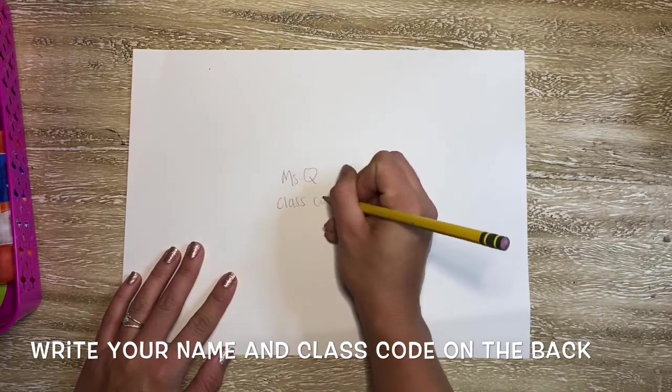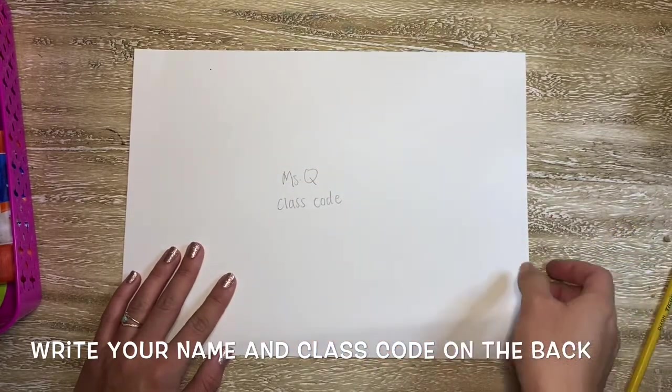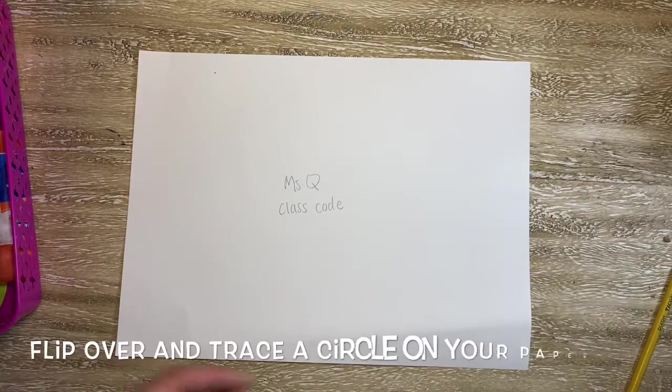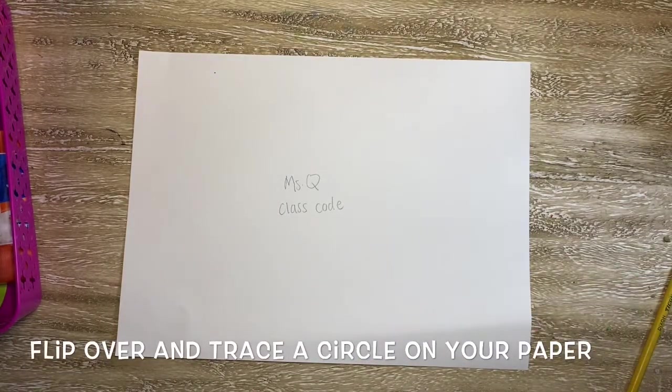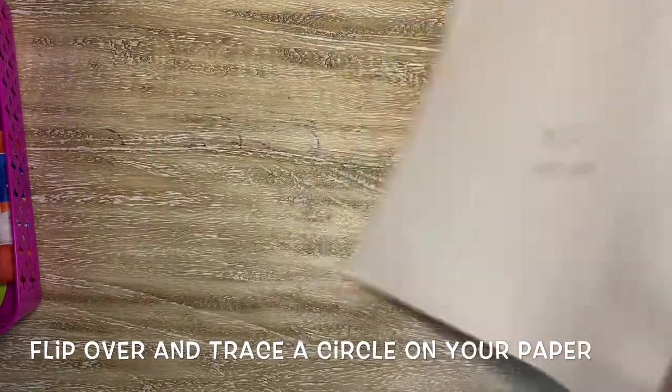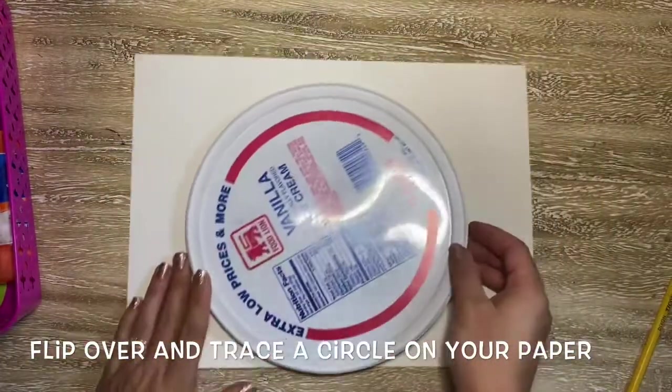Starting out by writing my name and class code on the back of my paper with pencil. Then I'm going to flip it over to the front. Now on the front I'm going to be using my pencil and a big circle tracer. Now this is a lid.